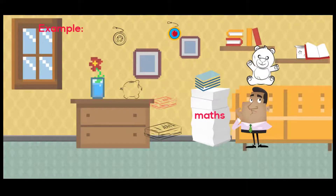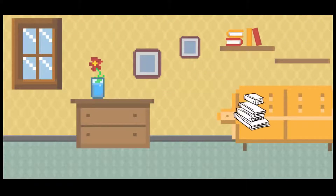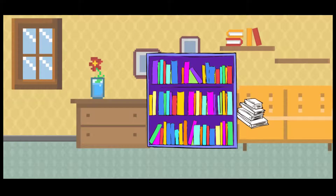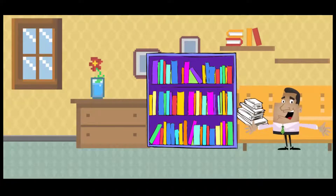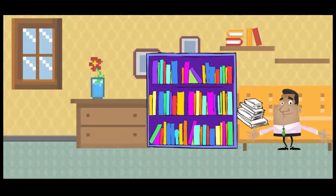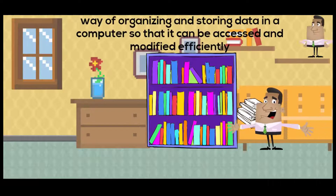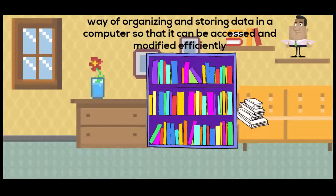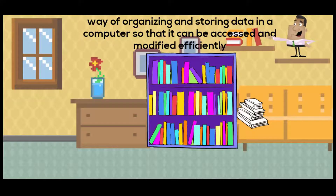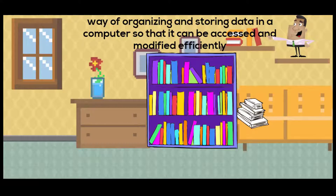If the books are sorted, and I ask you to pick any book, you can pick the book in a few seconds — hence your task will become easier. The same concept can be applied in data structures. So we can say a data structure is the way of organizing and storing data so that it can be accessed and modified efficiently.